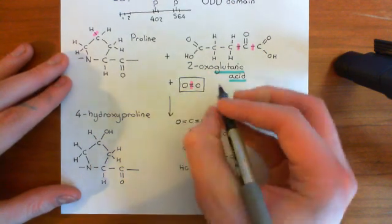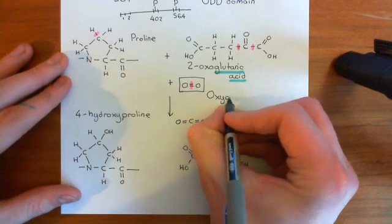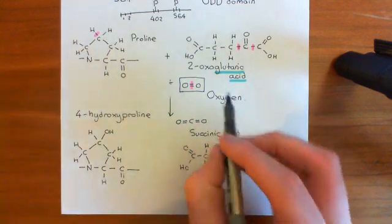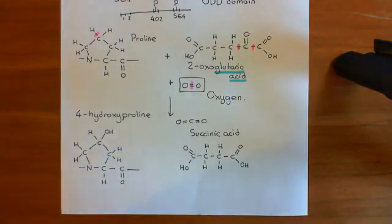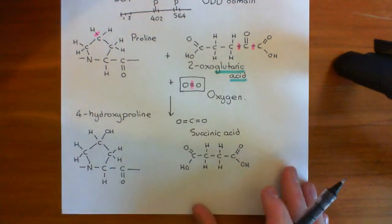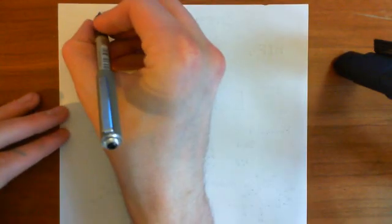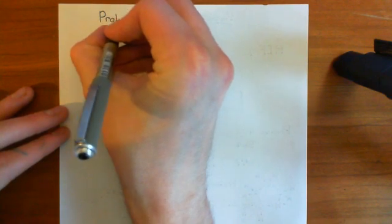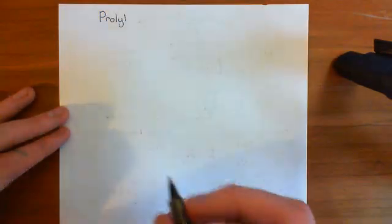This hydroxylation only occurs in the presence of oxygen. Under hypoxic conditions, when oxygen is low, the reaction will not occur and the prolines will not get hydroxylated. The hydroxylation of these prolines is essential for the degradation of HIF-1α. There are three enzymes which catalyze this reaction, though their naming systems are quite complicated.